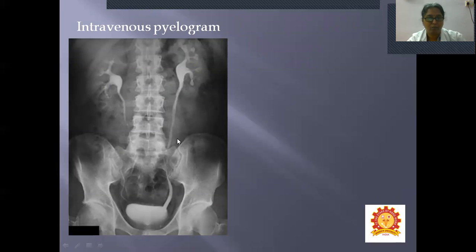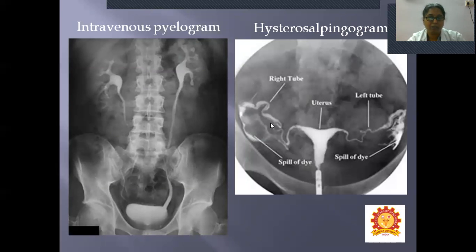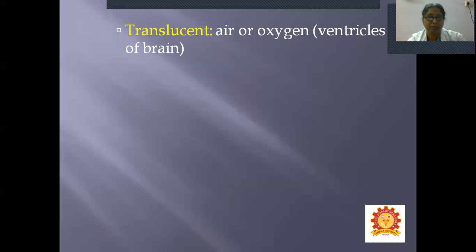An intravenous pyelogram is a contrast X-ray used to study the kidney and ureters; the pelvis of the kidney, ureter, and bladder are filled with contrast material. A hysterosalpingogram involves contrast material injected into the uterus and the fallopian tube — a trocar or cannula is used to inject the contrast material.